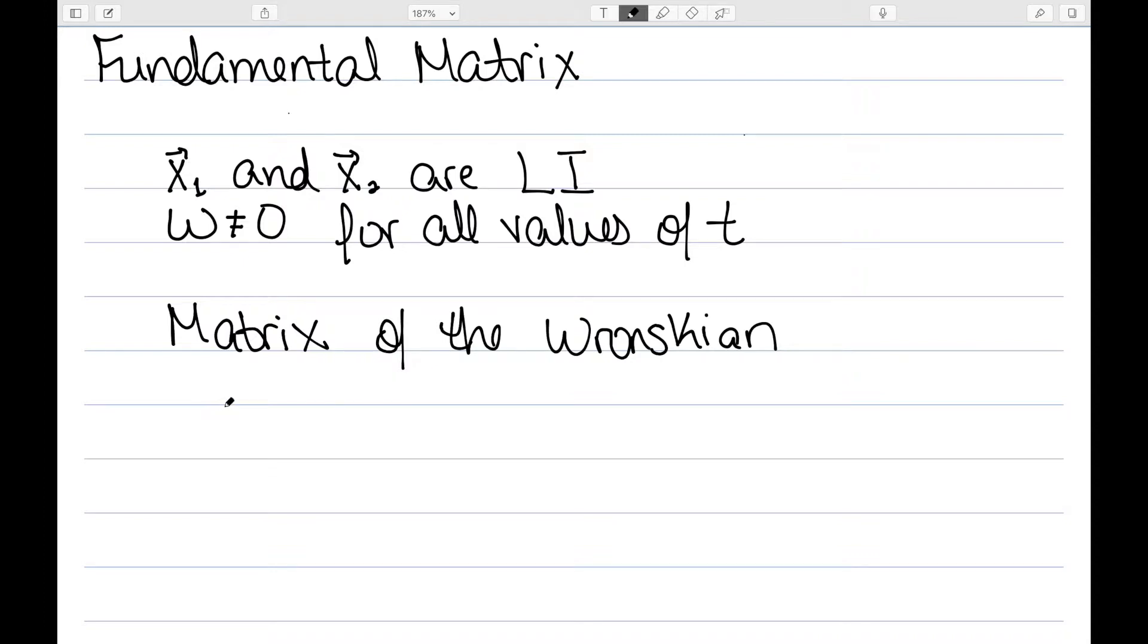And in this case, the fundamental matrix is the matrix of the Wronskian. So the Wronskian was a determinant, and this would be actually written in matrix form. For this example, [e^(3t), e^(3t); 3e^(4t), 2e^(4t)], since we verified that it satisfies both of these conditions.